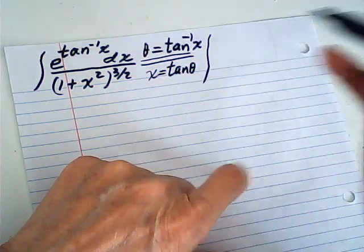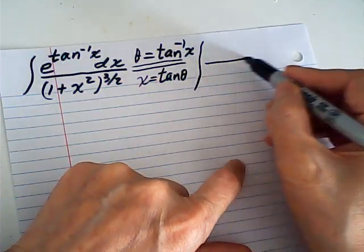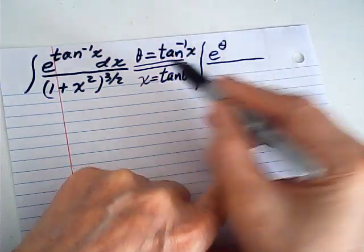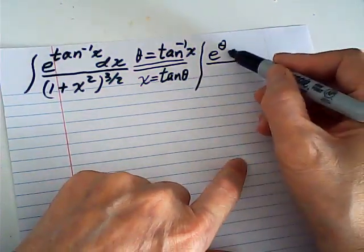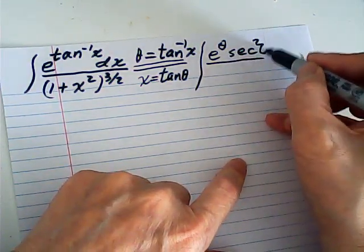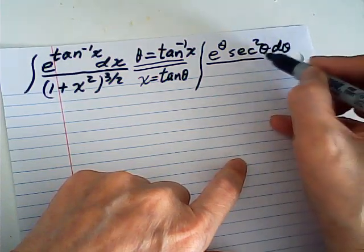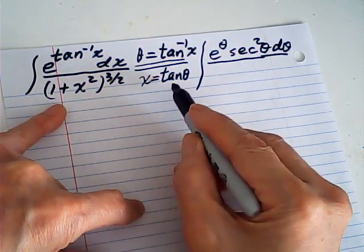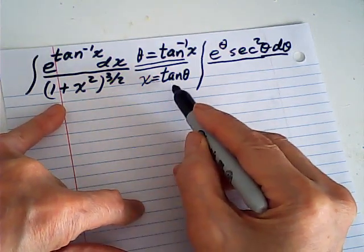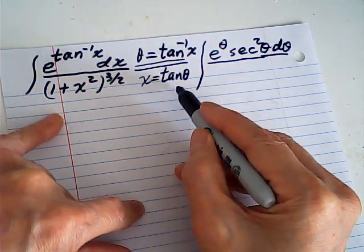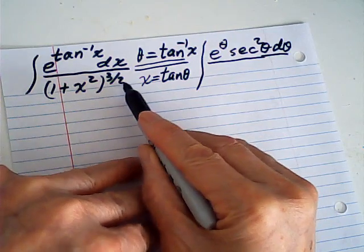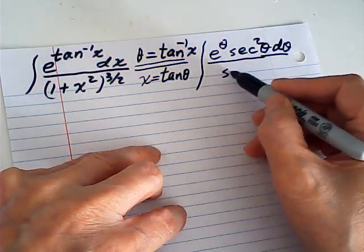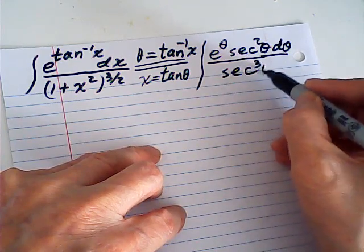Then my integral becomes e to the theta. dx is secant squared theta d theta. And 1 plus x squared is 1 plus tangent squared, that is secant squared. So the denominator becomes secant cubed theta.